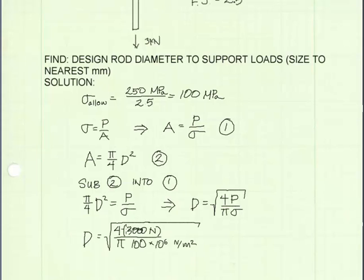Notice I've converted 3 kilonewtons to 3,000 newtons, and I've converted 100 megapascals for sigma allowable to 100 times 10 to the 6 newtons per meter squared. The answer comes out to be 6.18 times 10 to the negative third meters.